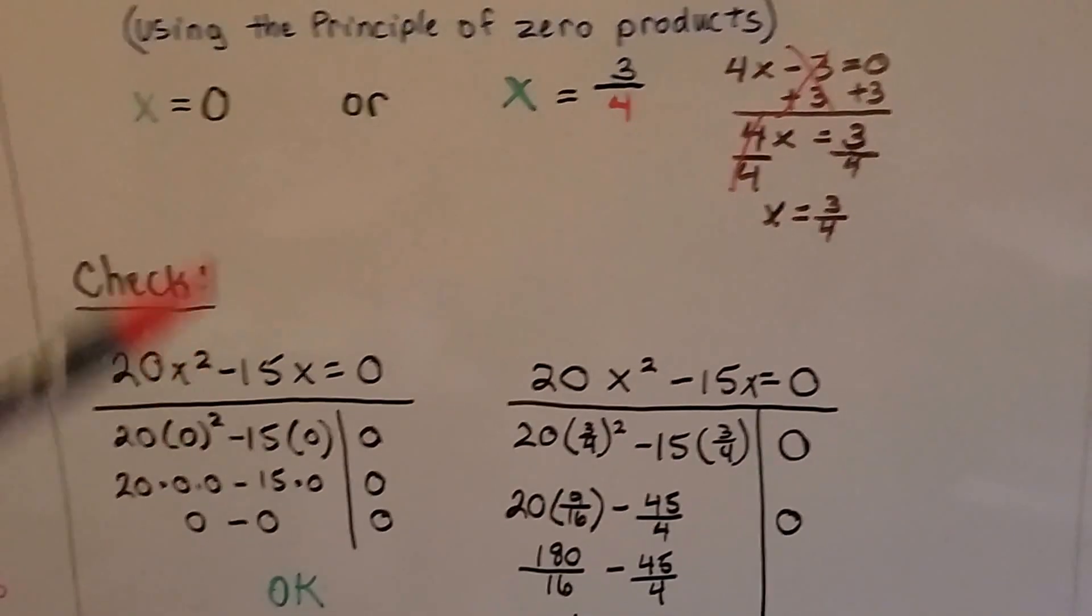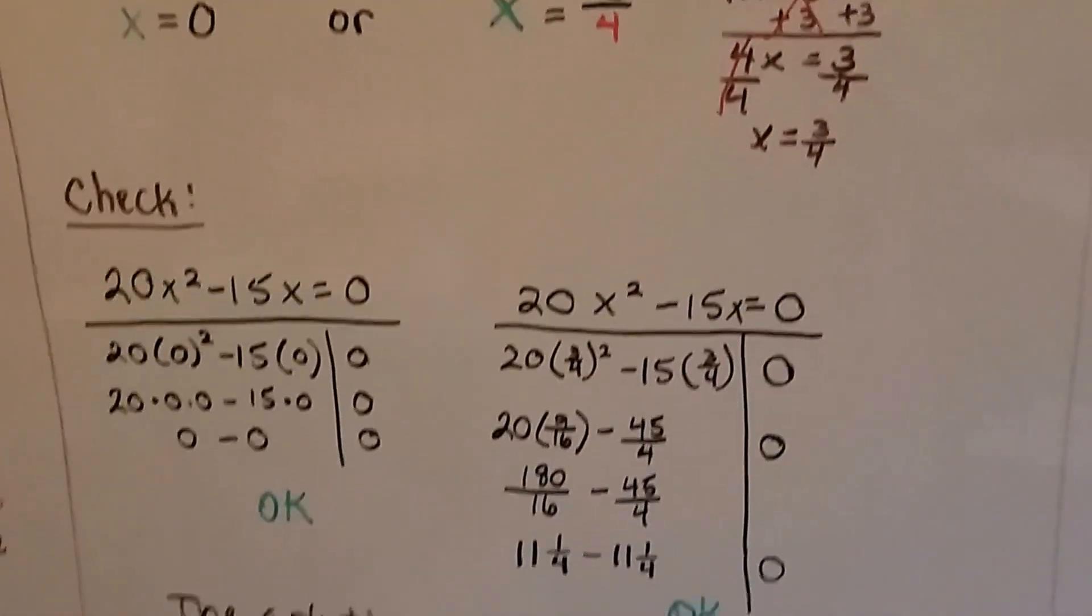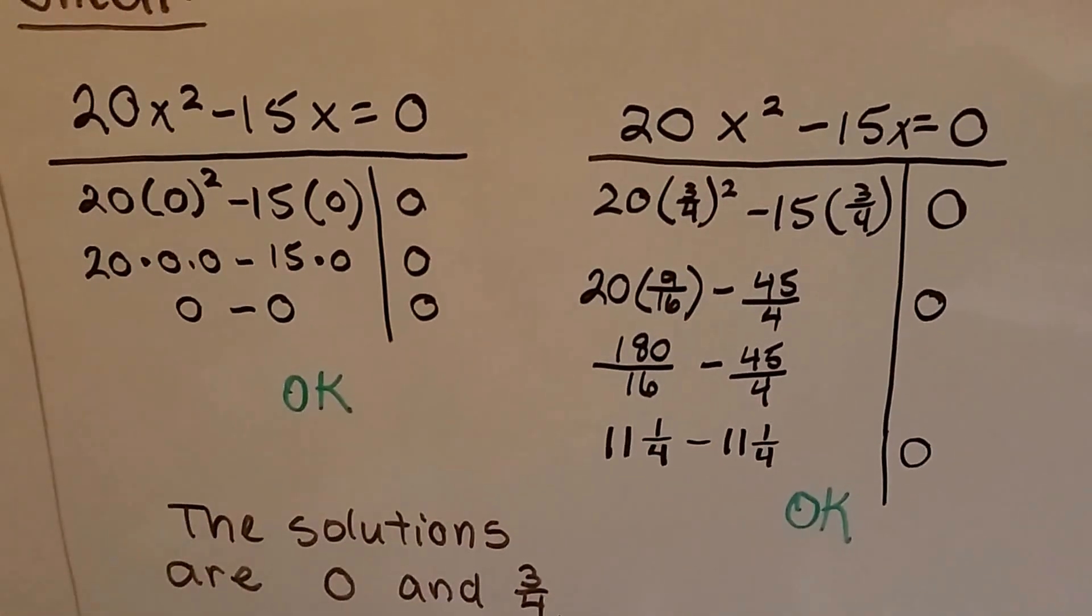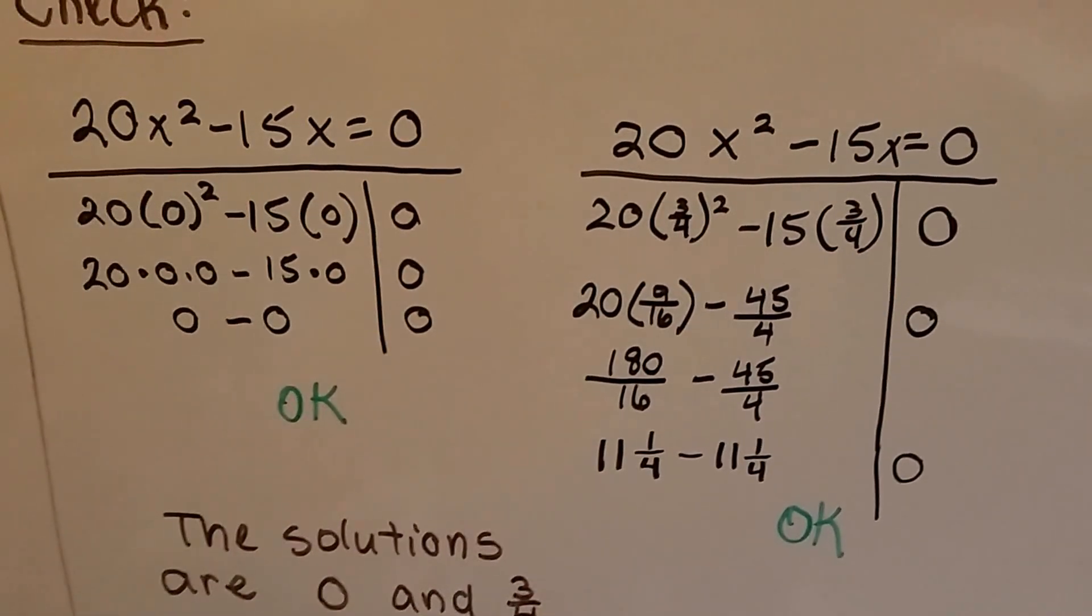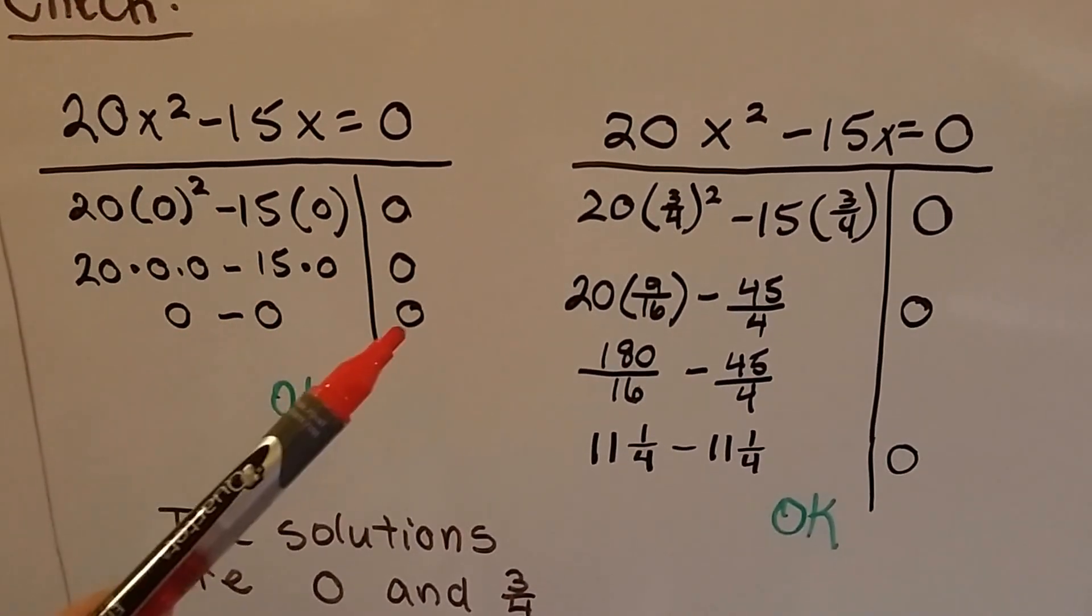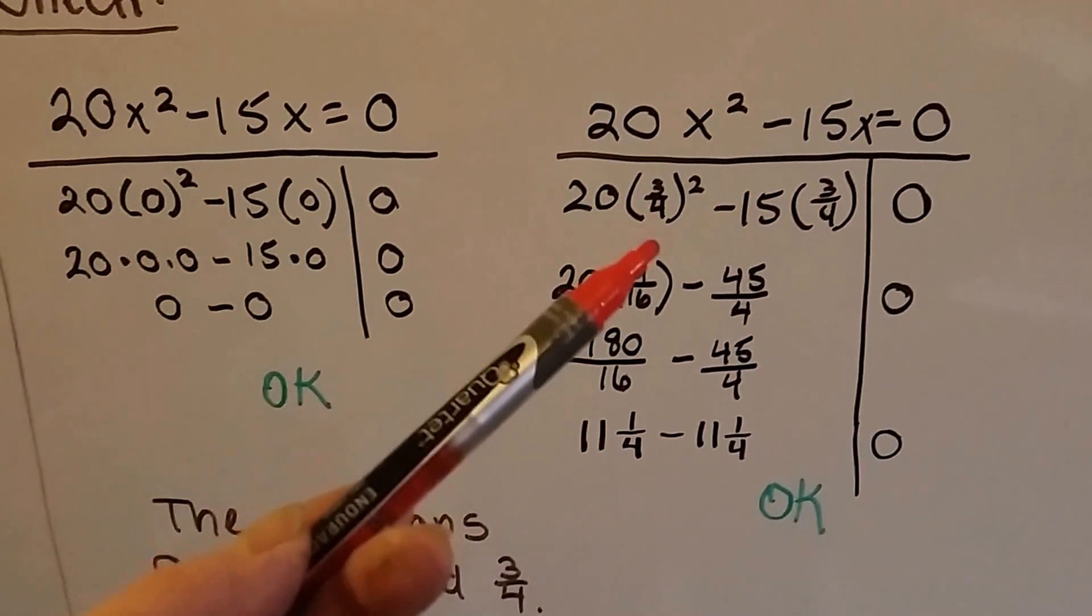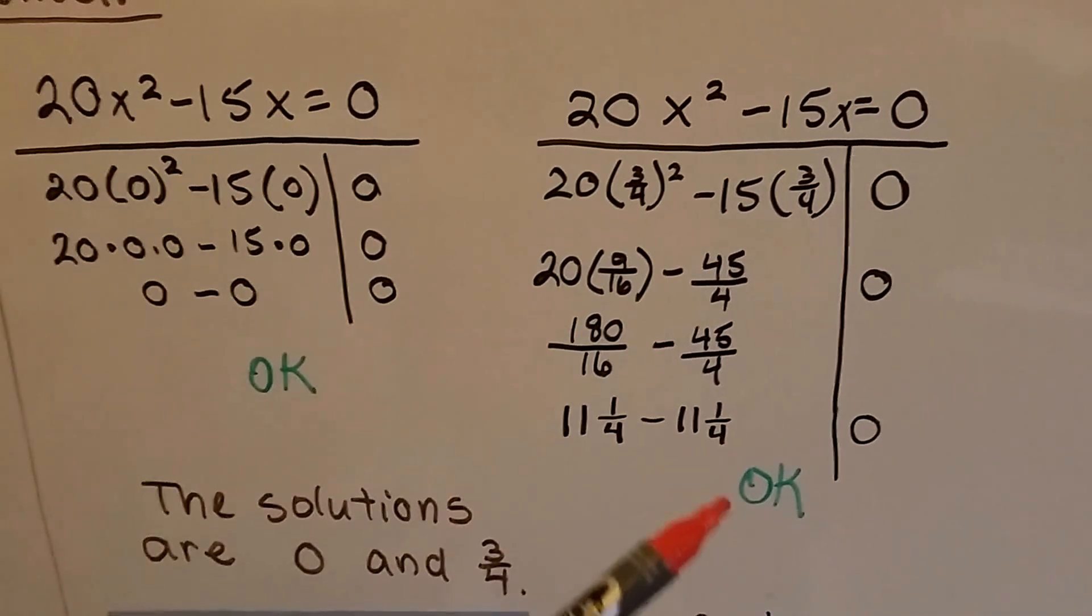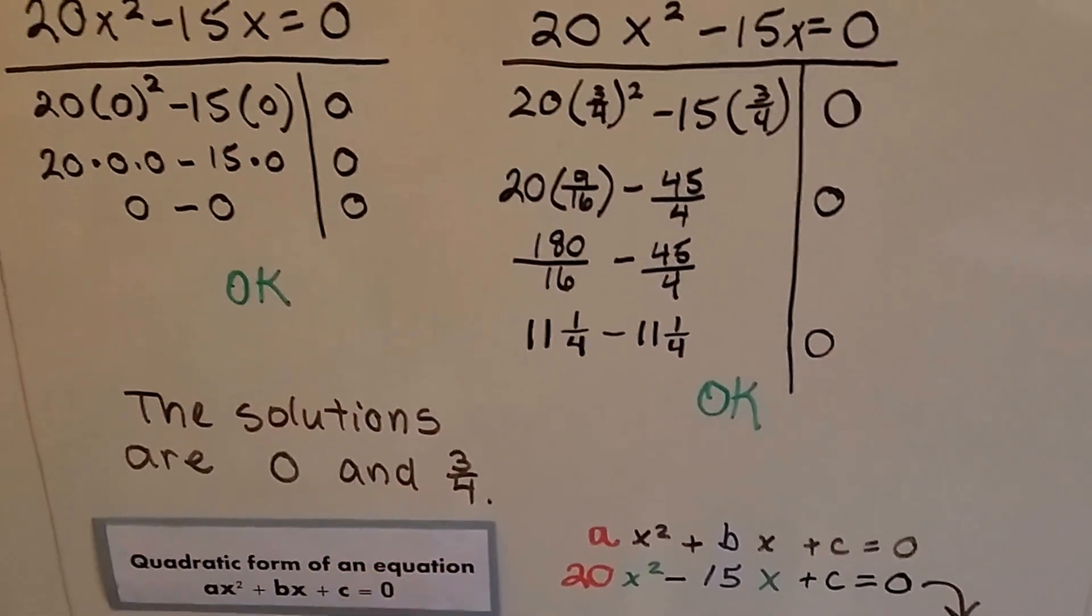We can check them by plugging in the zero into the original equation, or the 3 fourths into the original equation. And if they equal zero, then we did it correctly and we know they fit. This ends up being 20 times zero minus 15 times zero, so it's zero minus zero. And after we do all of our math, after plugging in 3 fourths here, we get 11 and a fourth minus 11 and a fourth. So the solutions are zero and 3 fourths.